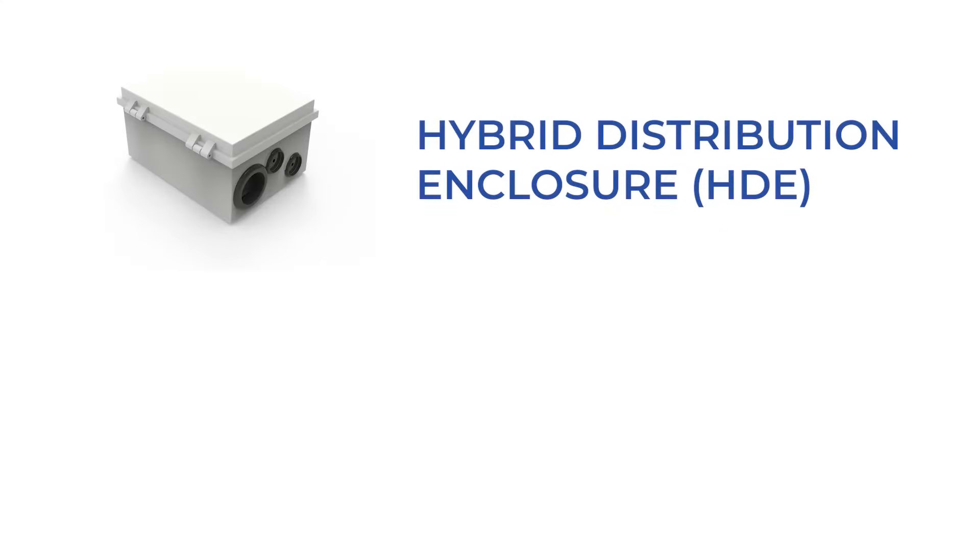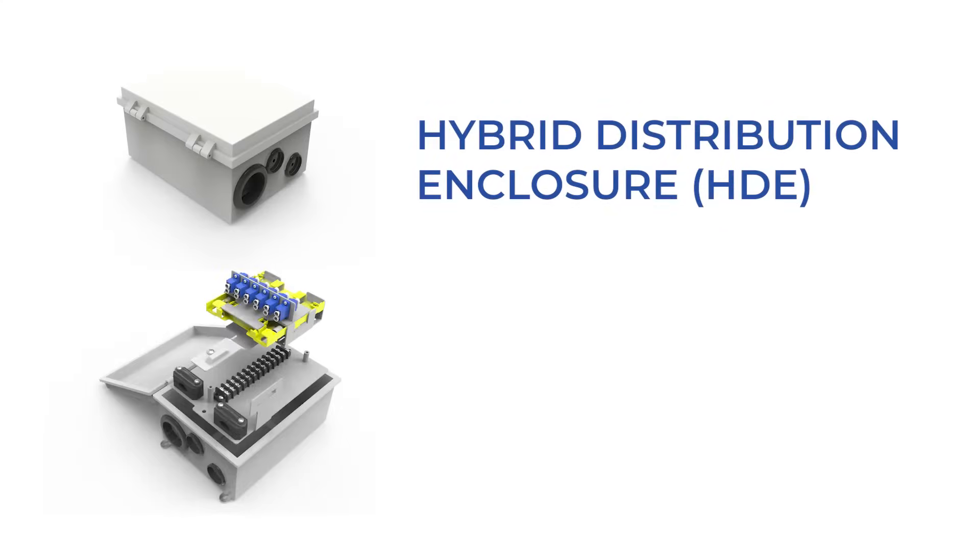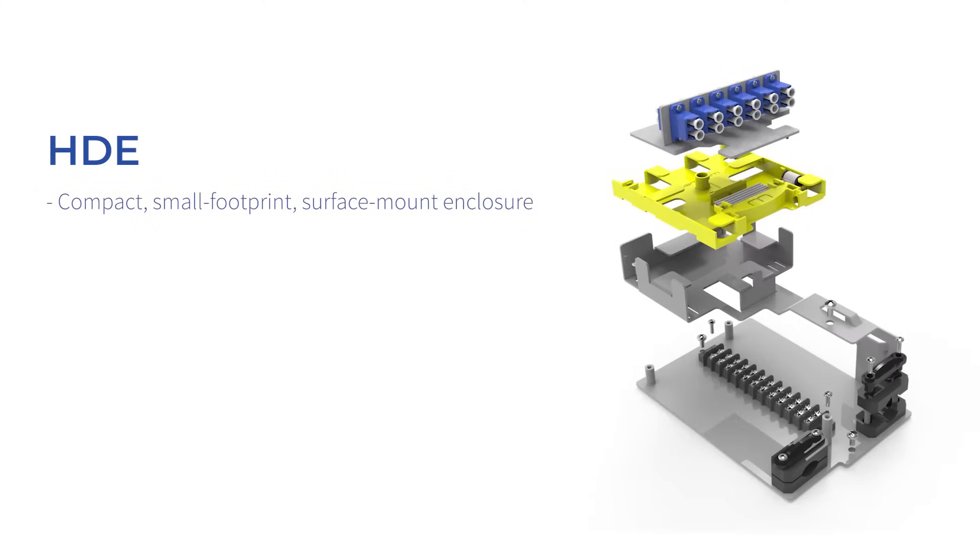Hi and welcome to the installation video for the hybrid distribution enclosure known as the HDE. The HDE is a compact, small-footprint, surface-mount enclosure intended for indoor installations requiring up to 12 fibers and 12 copper power conductors.